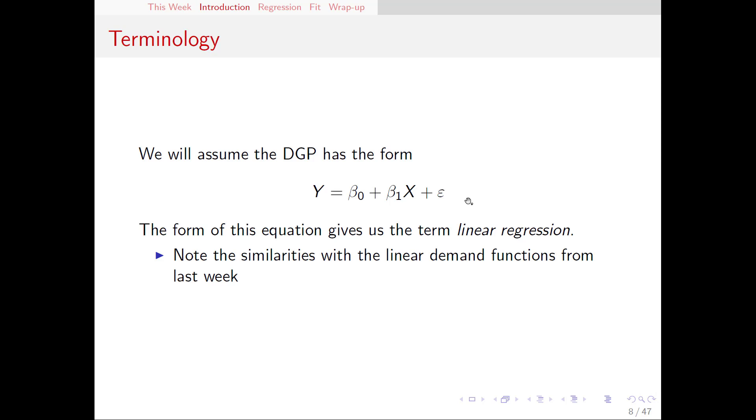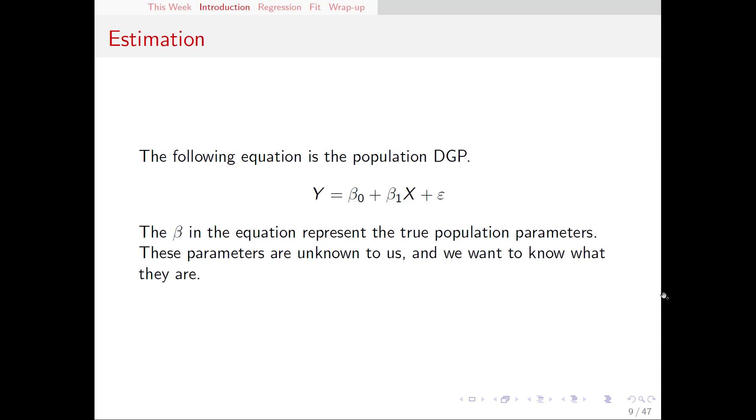Ignoring that epsilon for the moment, this is just the equation for a line, and this closely resembles the linear demand functions that we've thought about up to this point. So what are we going to do with this DGP? We have a dependent variable y, we've got an explanatory variable x, and they have this relationship β₀ + β₁x. We say that this is the relationship that these variables have in the population. This is the true relationship between x and y.